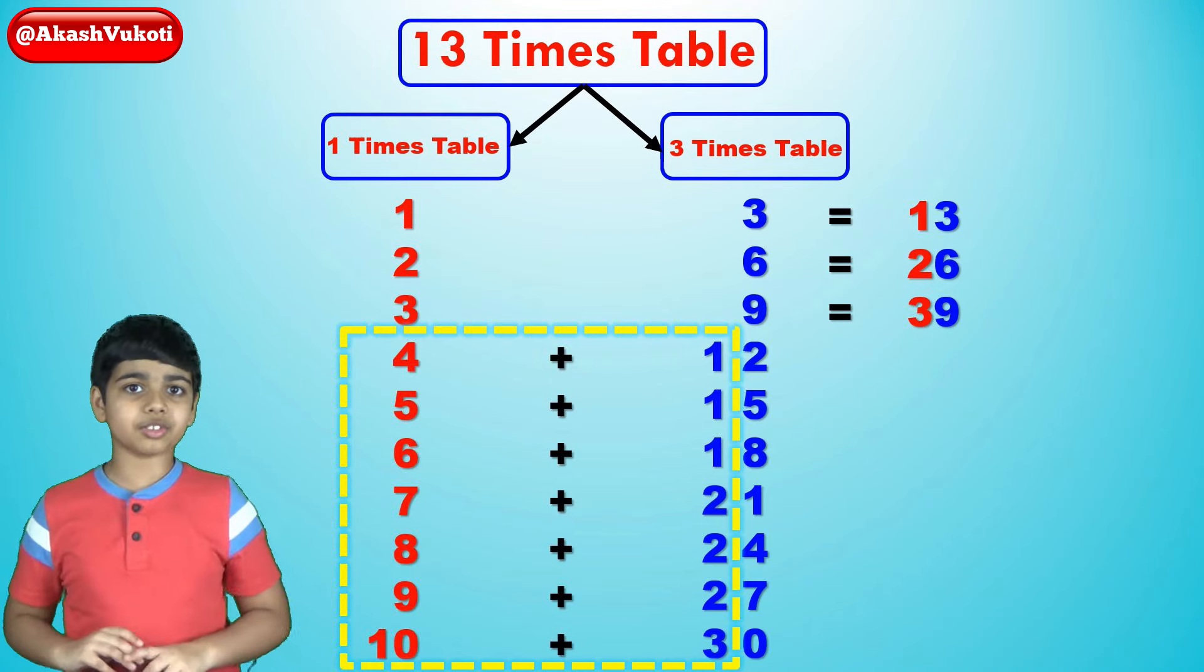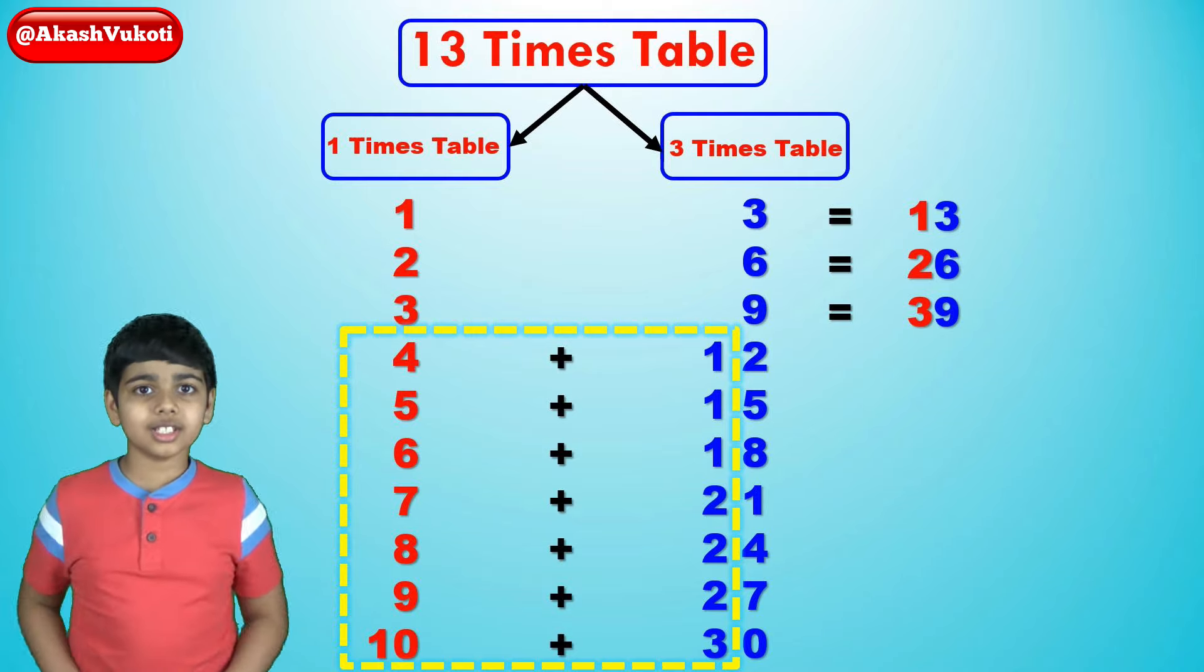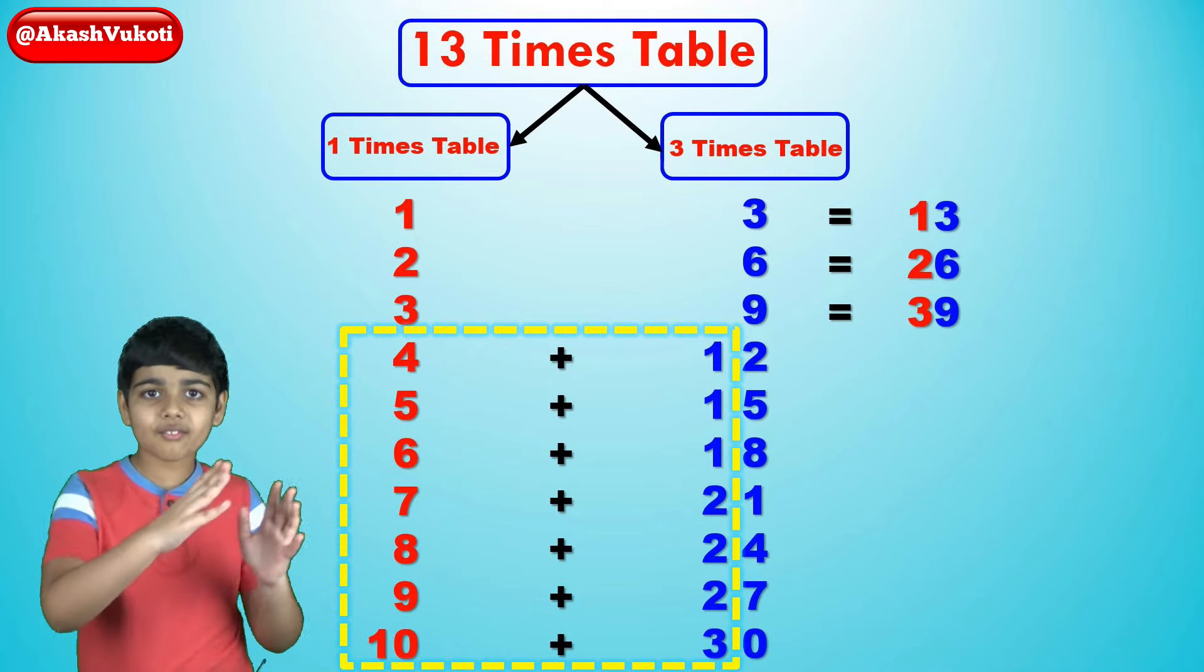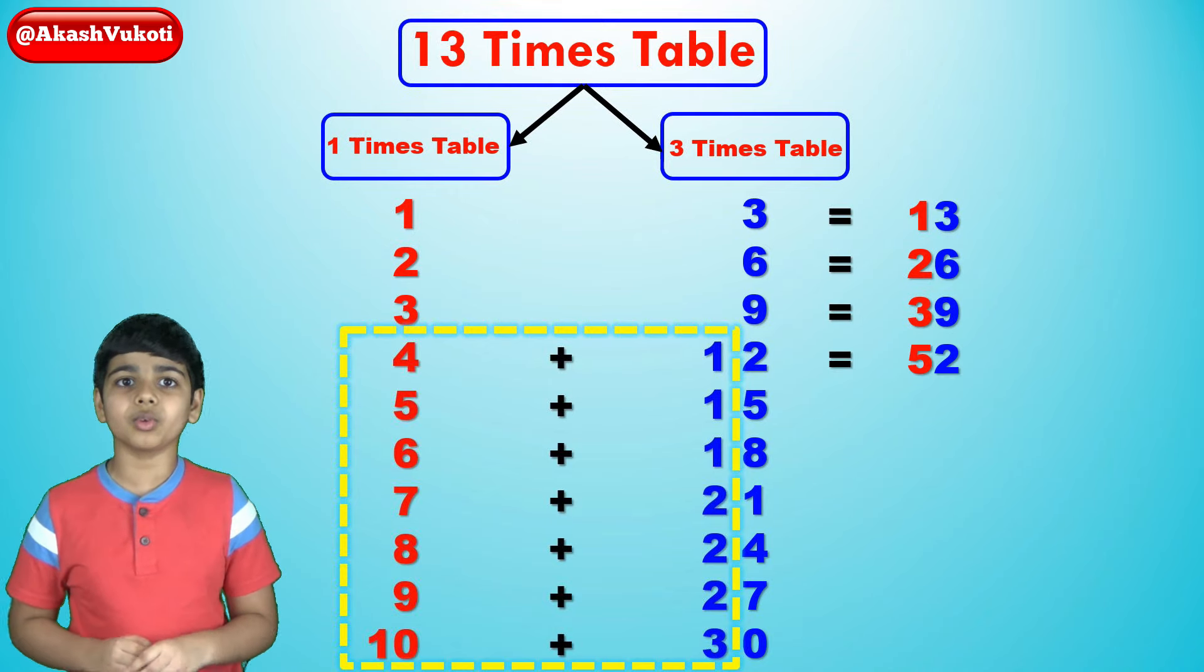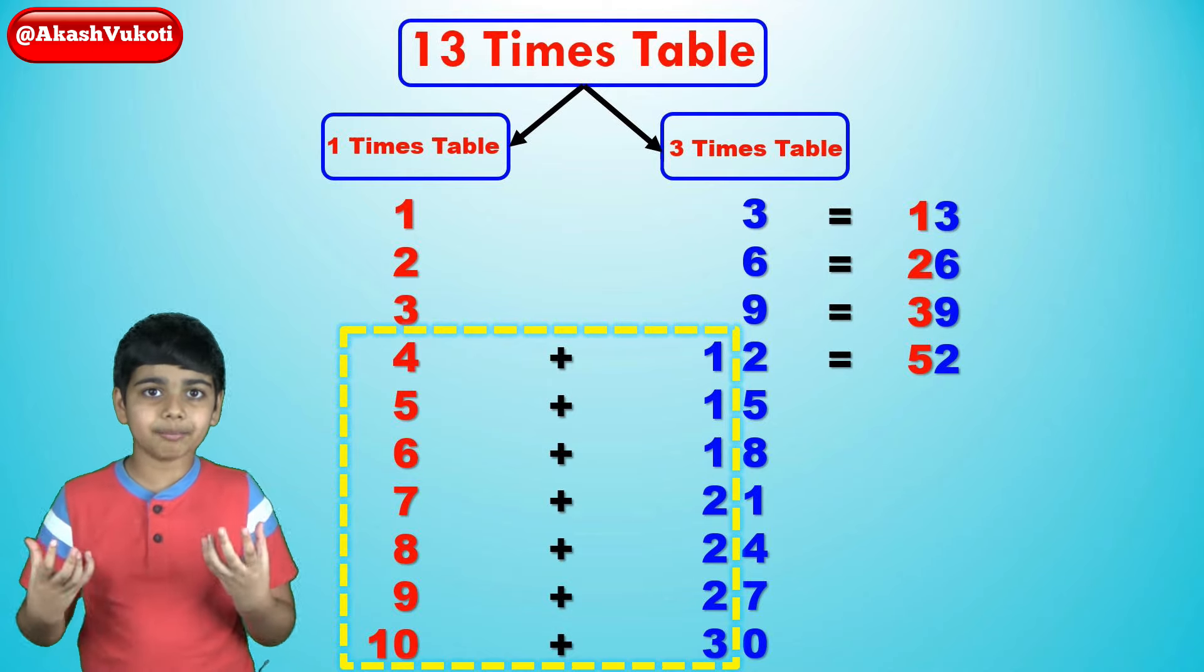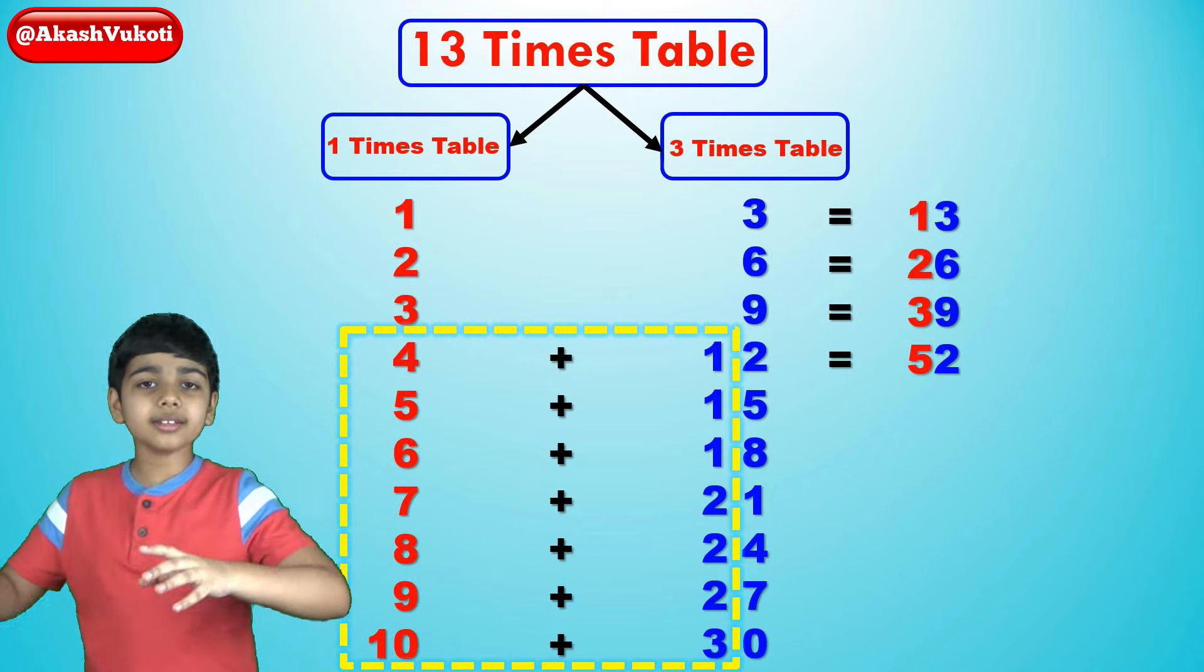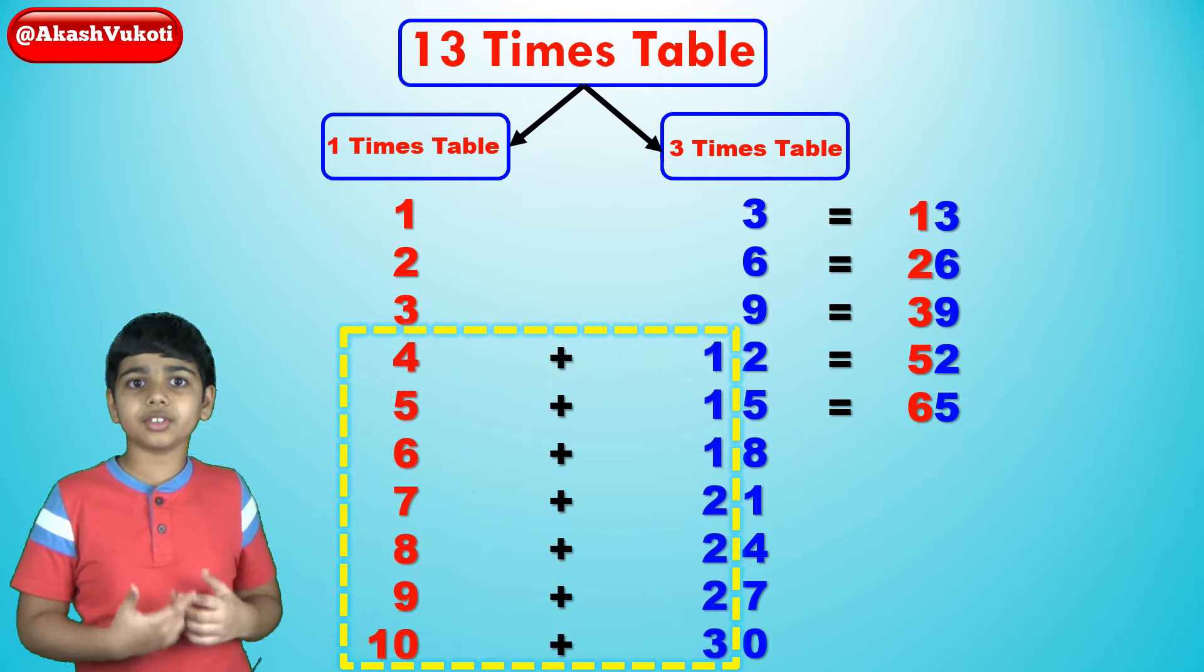13x4 is a little special. It's 4, 12, but 12 is 2 digits and we only have space for 1 digit at the end. So, we take the 1 from 12 and add it to the 4 to get 5. So 4, 12, 52. We're going to do that for these with that 2 digit at the end. 13x5 is 5, 15. So, take the 1 from the 15 and then add it to 5 to get 65. We're going to do it like that for the rest of these.